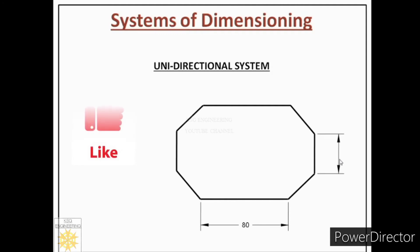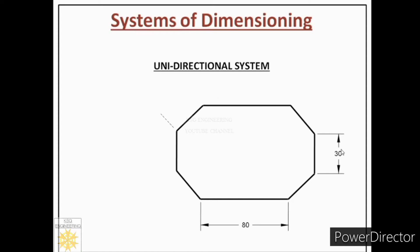Now let us understand vertical dimensioning under the unidirectional system. First, we draw extension lines and dimension lines. The dimension is readable from the bottom of the page and is placed on the dimension line after breaking the dimension line.